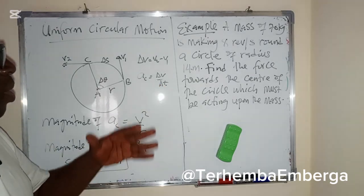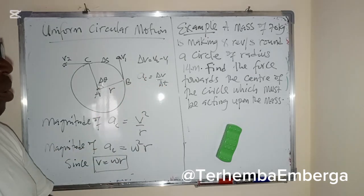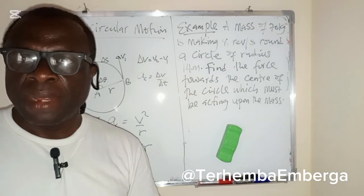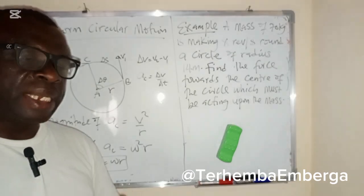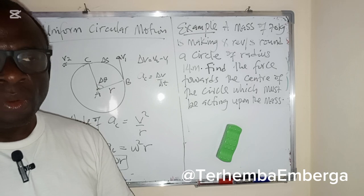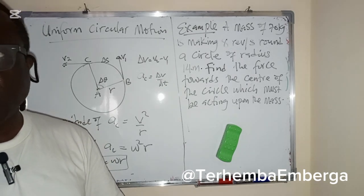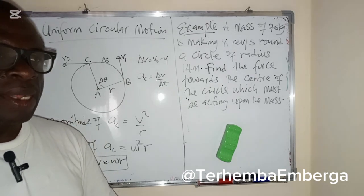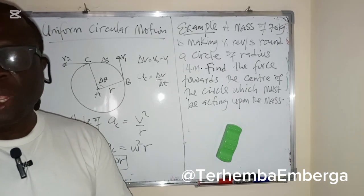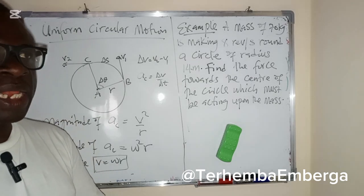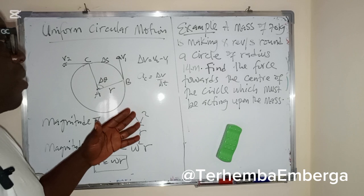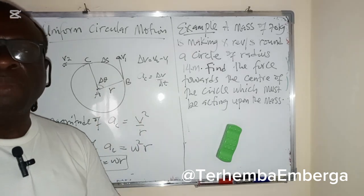Before we proceed, when we discuss motion on a straight line, we defined some parameters: displacement as the distance moved in a specified direction, speed as the rate of change of distance, velocity as the rate of change of displacement, and acceleration as the rate of change of velocity. When we talk about circular motion, we'll also mention these parameters.